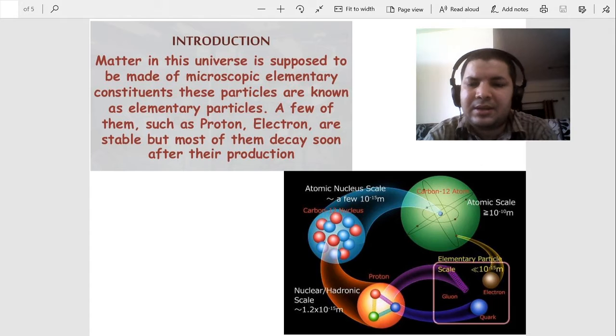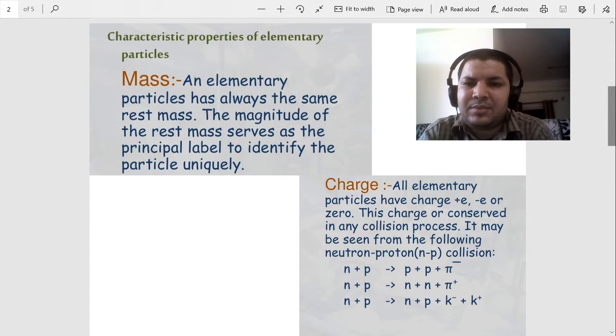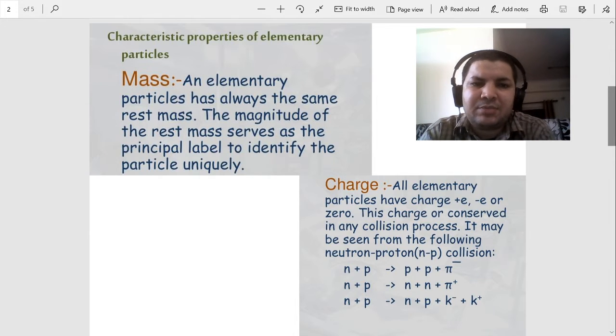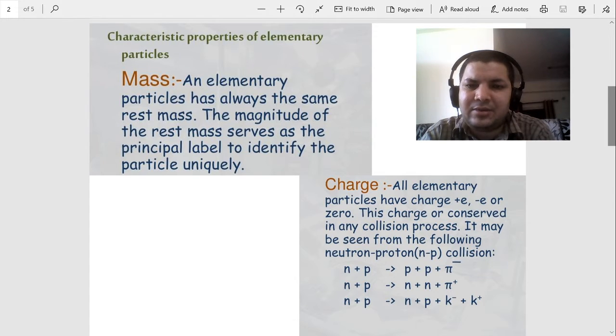Each elementary particle has some unique characteristics. We will discuss some of them. First, mass—elementary particles always have the same rest mass. The magnitude of the rest mass serves as the principal label to identify the particles uniquely.